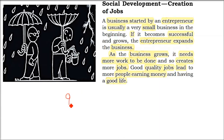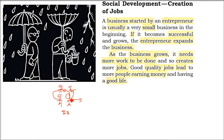Now comes social development — creation of jobs. Everyone needs a job because whether a person is single or married, he or she may have a wife, two kids, mother, father. To take care of so many people, they have to earn — because there are so many requirements: food, house, transportation. If you don't have money, you cannot do anything. So job creation is such an important issue.